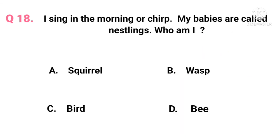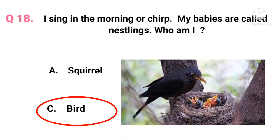Question 18. I sing in the morning or chirp. My babies are called nestlings. Who am I? The answer is option C — bird. Birds sing in the morning; this singing is called chirping. Their babies when they come out of the egg are called hatchlings, and birds a little older than hatchlings but who cannot fly or walk are called nestlings.